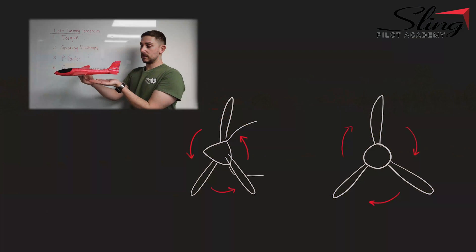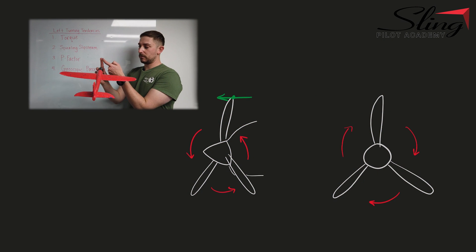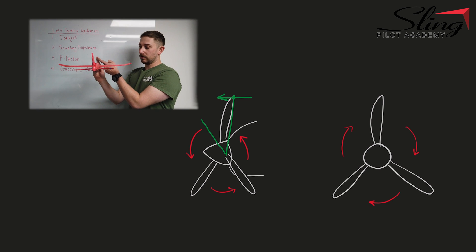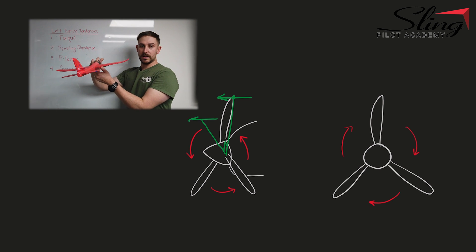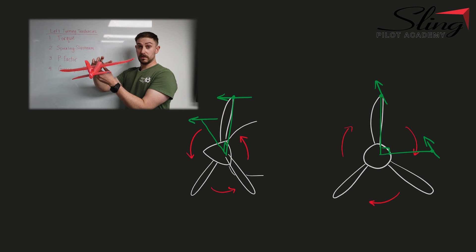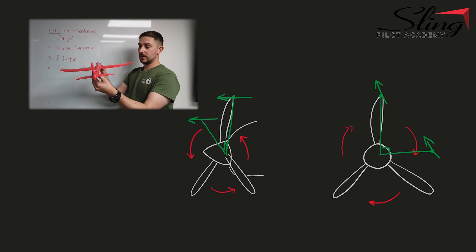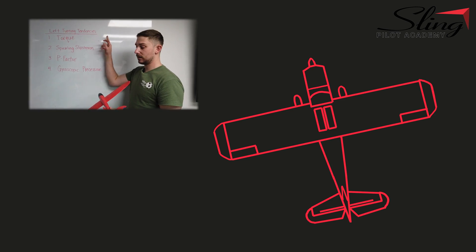When this happens, it creates a moment at the top of the propeller where a force is applied. That force is felt 90 degrees from the point of origin. So if it's pushed at the top, it's actually felt 90 degrees to the right of the clockwise-turning propeller, which gives us another yaw moment — another left turning tendency.